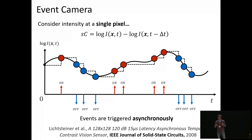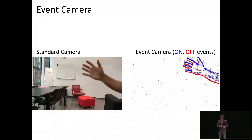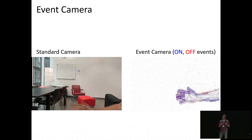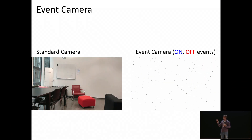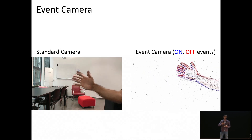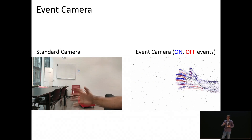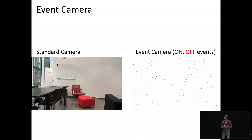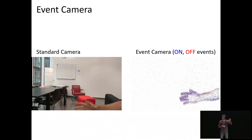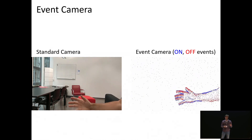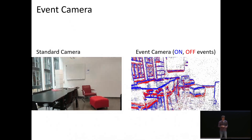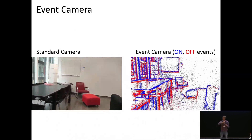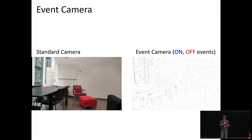This produces an asynchronous stream of events. An alternative way of showing events is to integrate them into a fixed time window — for example, 10 milliseconds — and display them in the image plane. Blue and red correspond to positive and negative changes in intensity. The background, which is not moving, does not trigger any events. However, when a hand moves, events are triggered mostly where the edges are. When the camera itself moves, events are triggered all over the plane, corresponding mostly to edges in the scene.